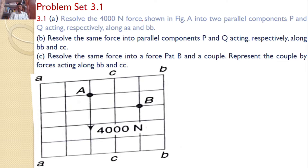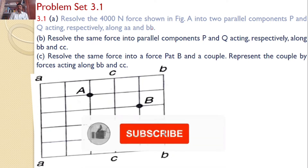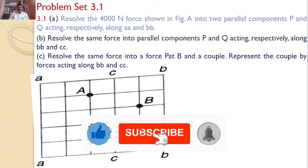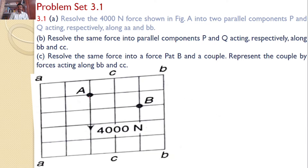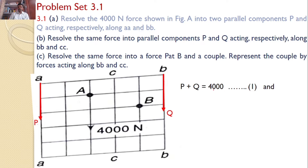Resolve the 4000 newtons force as shown in the figure into two parallel components P and Q acting respectively along AA and BB. There is a 4000 newtons force acting at A, and we need to resolve it into two components: one force acting along AA and another along BB. The first primary condition is the sum of these two forces must equal the parent force 4000, so P plus Q is equal to 4000.